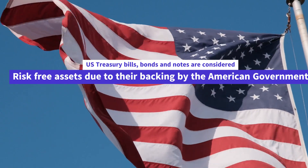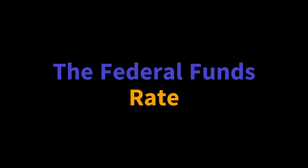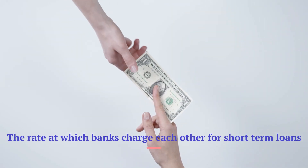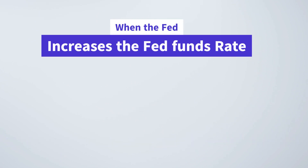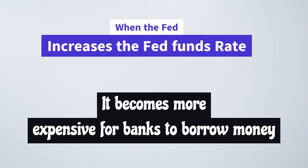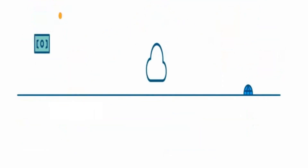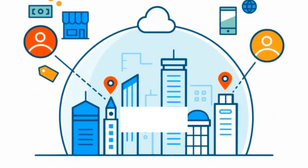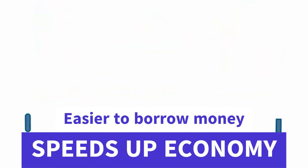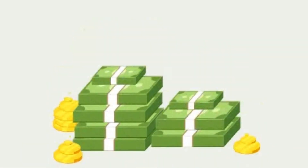Now let's get back to the next main tool, that is, the federal funds rate. The federal funds rate is the interest rate that banks charge each other for short-term loans. When the Federal Reserve raises the federal funds rate, it makes it more expensive for banks to borrow money, which helps to slow down the economy and reduce inflation. And when the Federal Reserve lowers the federal funds rate, it makes it easier for banks to borrow money, which helps to speed up the economy and boost economic growth.